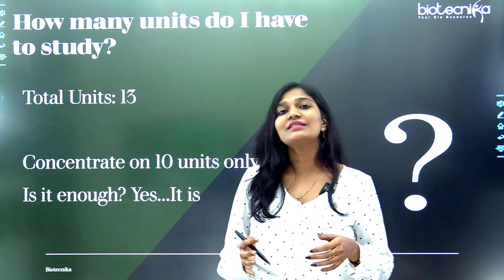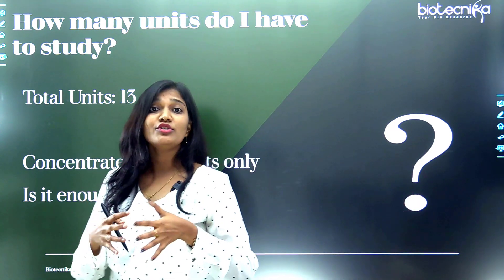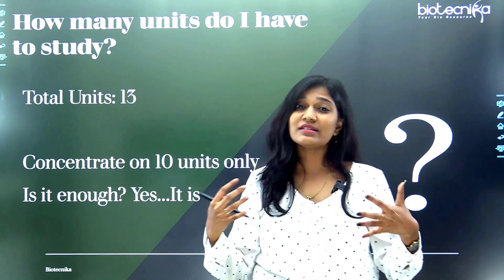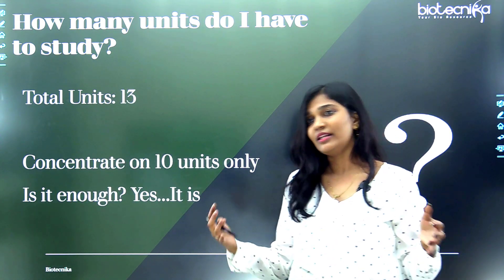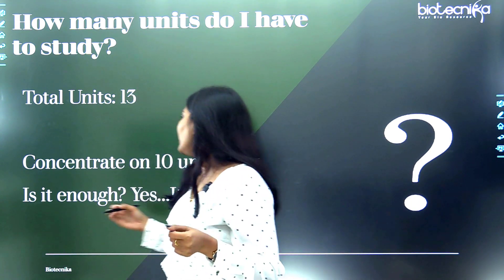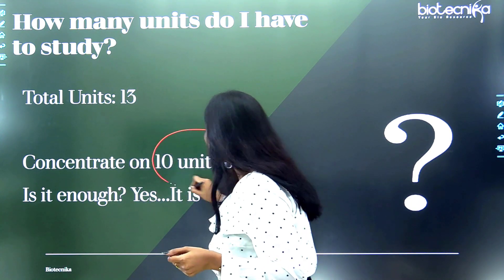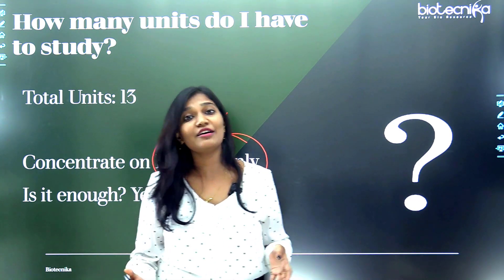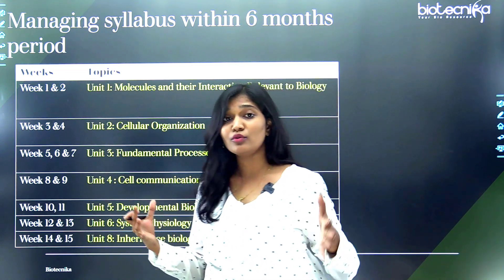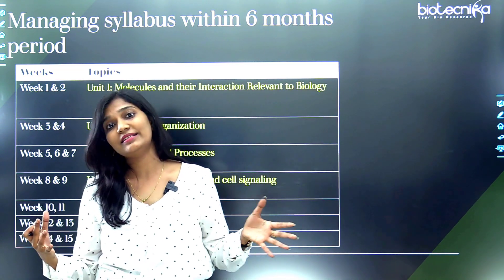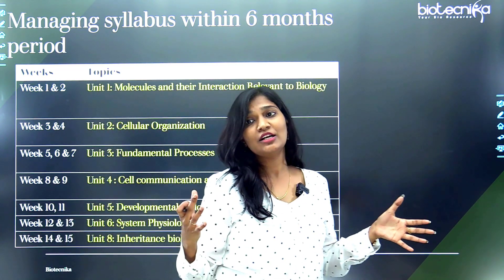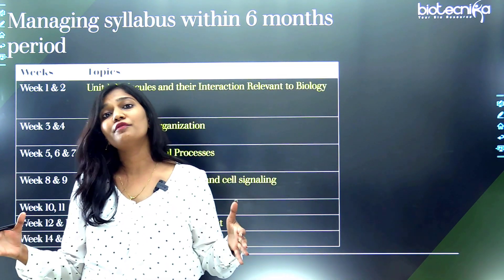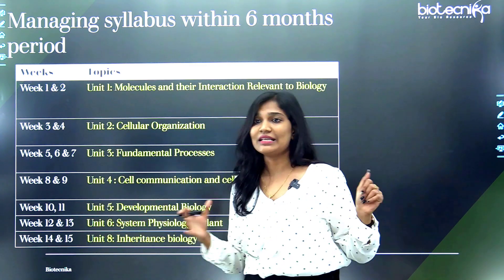The CSIR syllabus is quite vast — it has 13 units. But you don't have to study all 13 units. If you concentrate on only 10 units, that is enough. I promised to help you manage the CSIR NET Life Science syllabus within six months, and here is the plan: you can follow it and finish off your entire syllabus within six months.